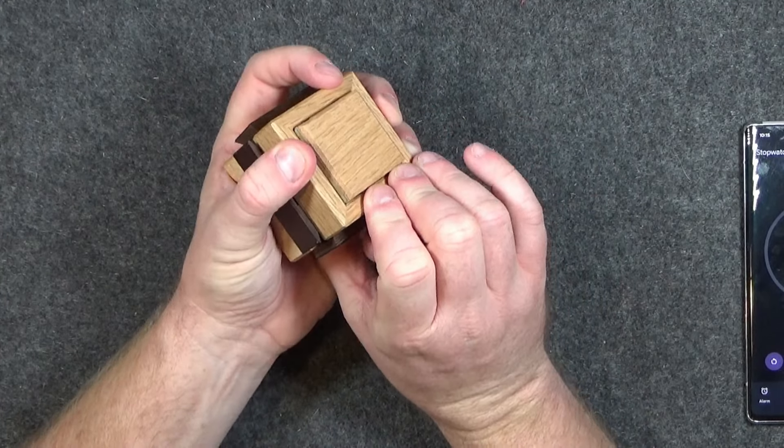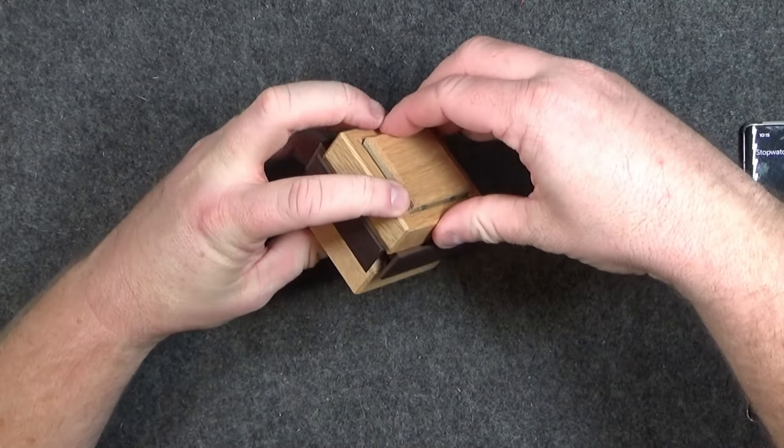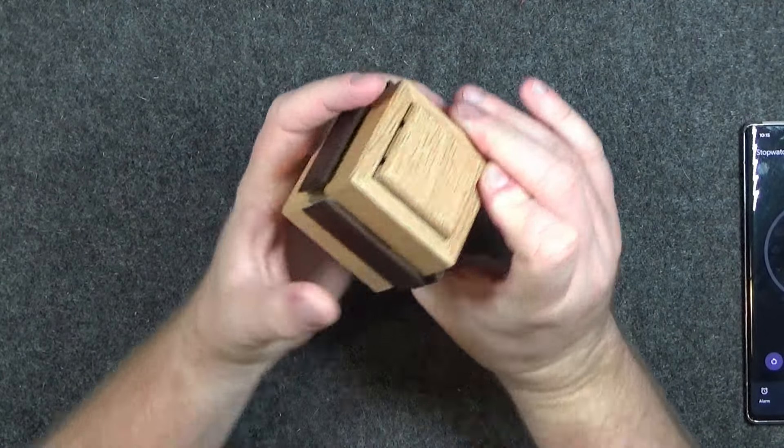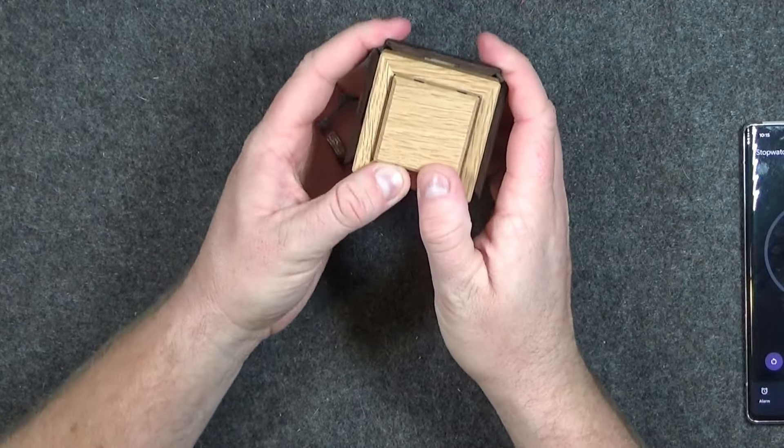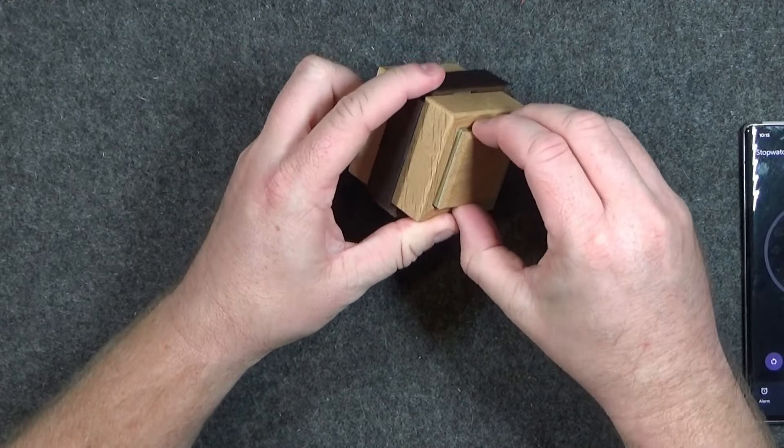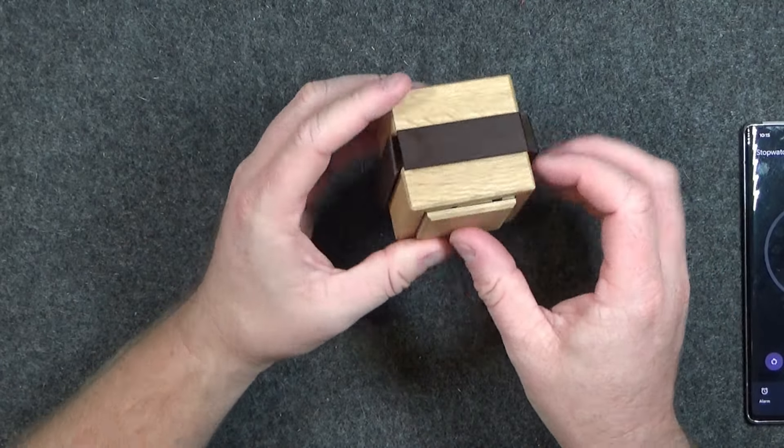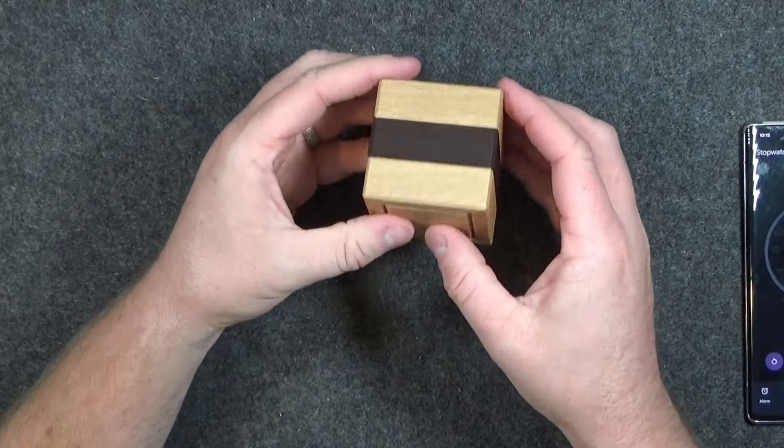This is going to be tricky. I think this piece here just slides. It looks like it just slides off. You can see those two gaps right there, which would indicate a rail of some sort. Does it go the other way? Ok, it only goes this way.